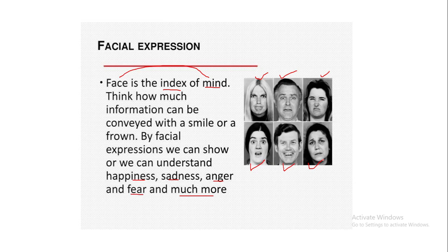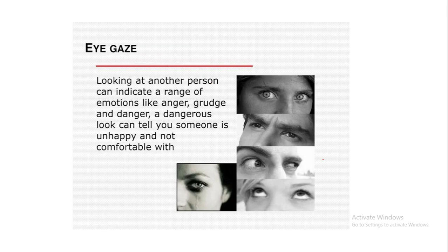Facial expressions are very important, and so is eye gaze. Looking at another person can indicate a range of emotions like anger, grudge, and danger. A dangerous look can tell you that someone is unhappy and uncomfortable. Through the movement of eyes, we can convey happiness, anger, denial, and acceptance. Without speaking a single word, we can convey a lot of messages only by the eye gaze.